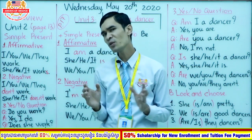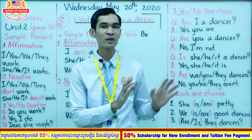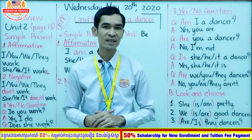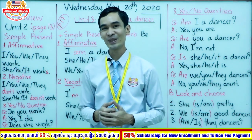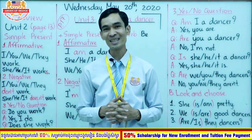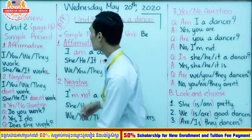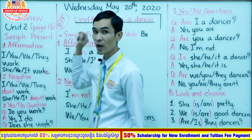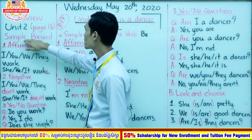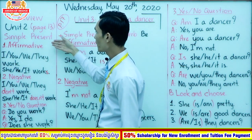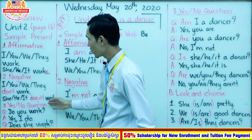Did you remember what subject we can use with 's' and what subject we use with words we don't add 's', 'es', or 'ies'? Did you remember that? Okay, I think most of you can remember but some maybe still forget. Now let's review. In Unit 2 on page 13, we focus on simple present and we have three forms: affirmative, negative, and yes/no question.